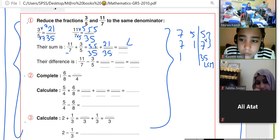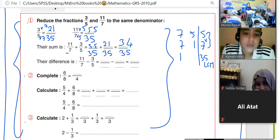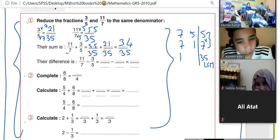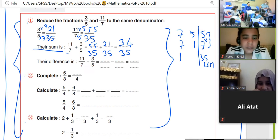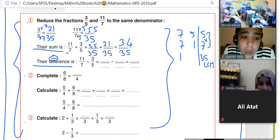5 minus 1, 4. 5 minus 2, 3. It's 34 over 35. Now, I want to make minus. Here there's sum, here there's difference, that means minus. Here addition.